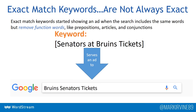If we had the keyword 'Senators at Bruins,' Google could now serve traffic to the search 'Bruins Senators tickets,' which removes the 'at.' This gives Google a lot of free reign to either add or remove words from our exact match keywords. A lot of these changes are inconspicuous; some can get really semantic and change the meaning of the search effectively.